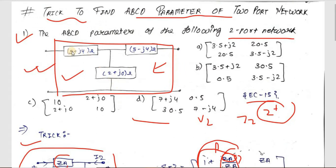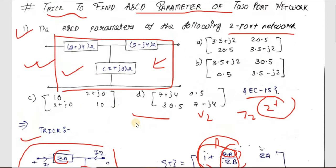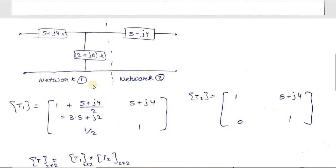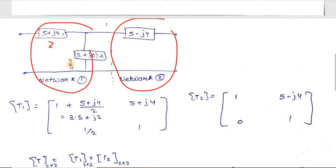Coming back to this sum — we have a T-type network, not simply a single-section network. If you look carefully, you can see this T-network as a cascading of two sub-networks: network one and network two. Since it is a cascaded network, we find the ABCD parameters of each sub-network and then multiply them to get the complete transmission parameter matrix.